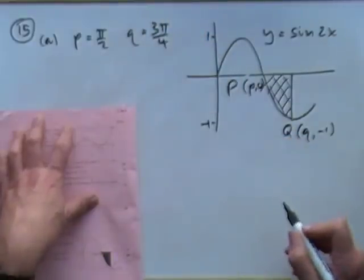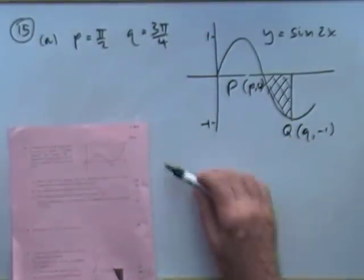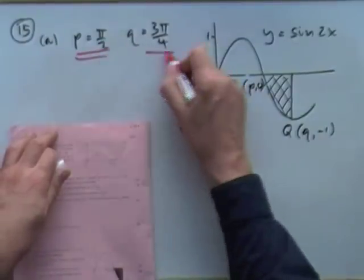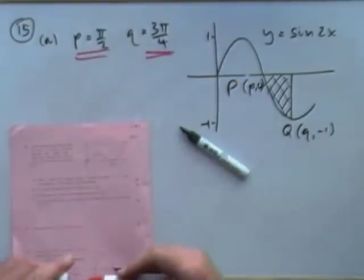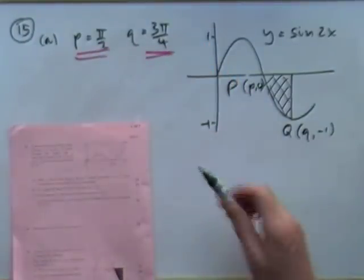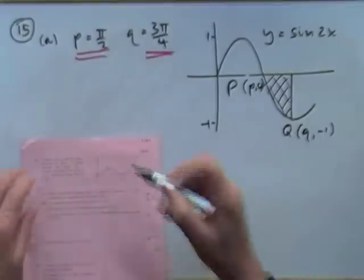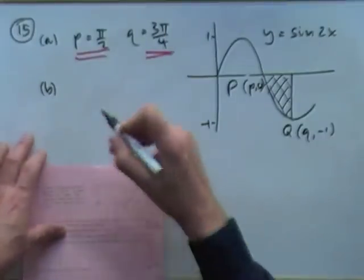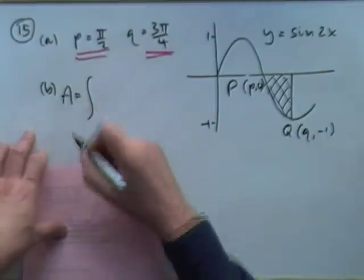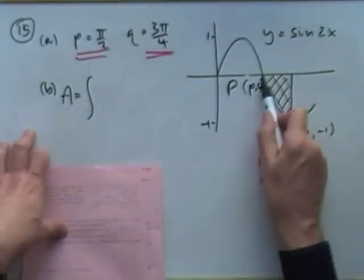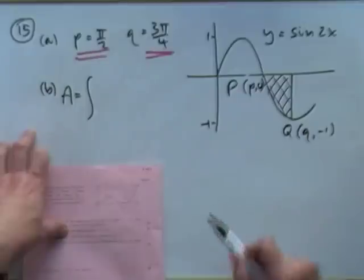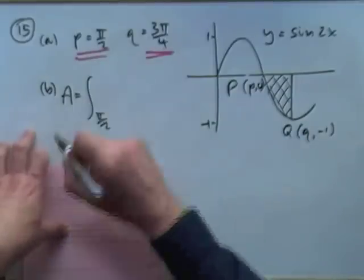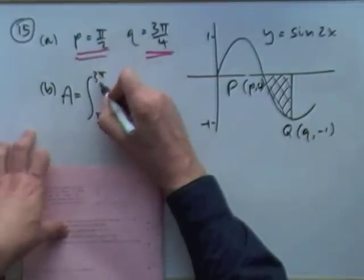Those are one mark for both values together. Part b: find the shaded area. Integrate sin 2x from π upon 2 to 3π upon 4.